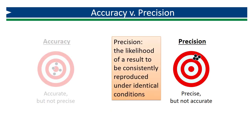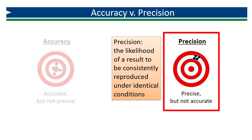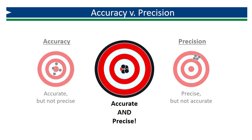Precision, on the other hand, refers to the repeatability of a result across successive attempts. The target on the right is a depiction of the concept of precision. All of the marks are tightly grouped in a small area, indicating a high degree of repeatability. The target in the middle of the screen is an illustration of both accuracy and precision. Each of the marks is centered around the bullseye, and there is very little variation in their position. This is the ultimate goal of a laboratory QAQC program — data that is both precise and accurate.